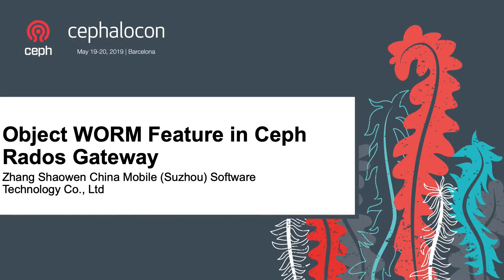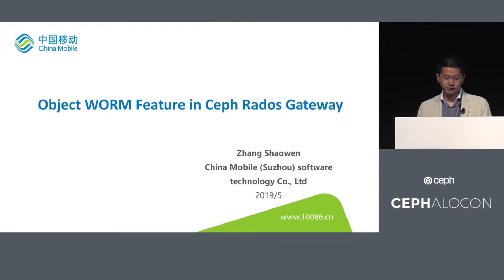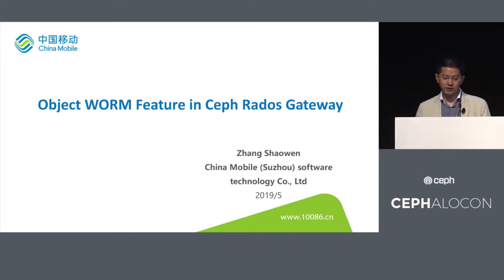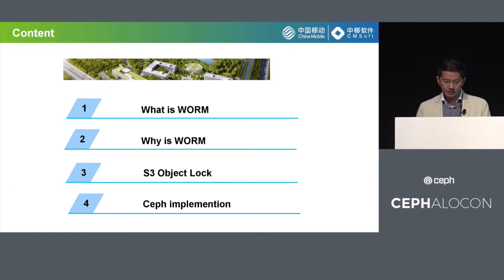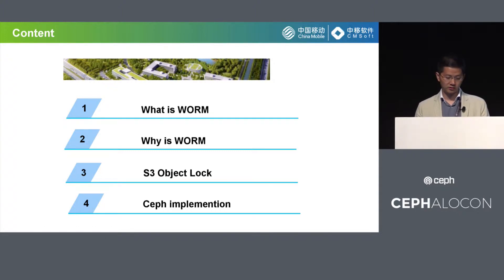Good afternoon, everyone. I'm Zhang Shaowen. I come from China Mobile Sushu Software Technology. I'm glad to have the opportunity of making this presentation about the object WORM feature in the SafeReduce Gateway. Here is what I'll share today: first, I'll introduce what is WORM and why we need WORM, then I'll introduce the S3 WORM feature, which is also called S3 object lock, and the last is the work of WORM in Safe.